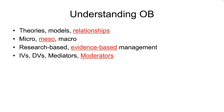A different type of third variable is the moderator. A moderator affects the strength of the relationship between an IV and a DV. It answers the question of whether the relationship depends upon or is contingent upon the moderator variable. Here's an example that is sad but true: the relationship between performance and salary depends upon — is moderated by — one's sex. The correlation between performance and salary for men is higher or stronger than the same correlation for women. We'll look at mediators and moderators in a visual diagram on the next slide.